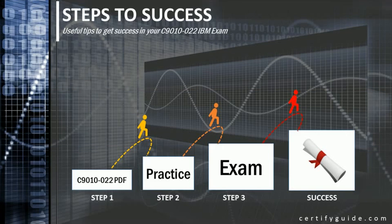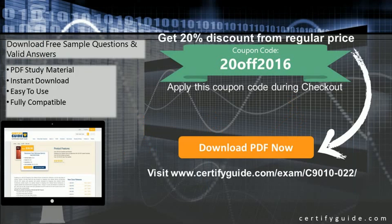In order to get success in your C-9010-022 IBM exam, you need to take PDF study material and practice it well, then take the real exam for guaranteed success. You can get free demo questions or buy full training material at the given link in the description of the video.